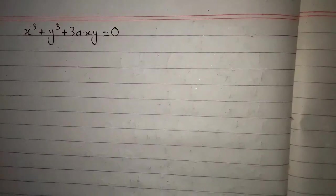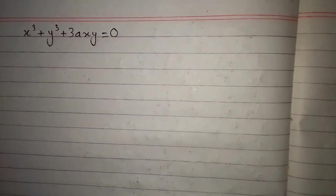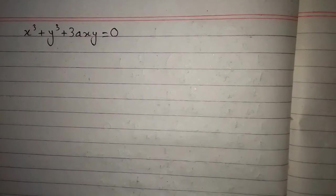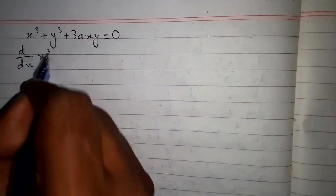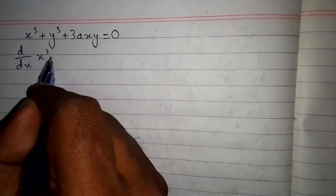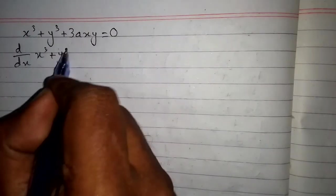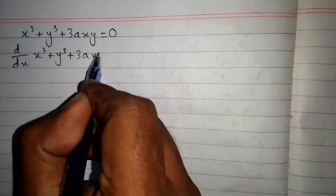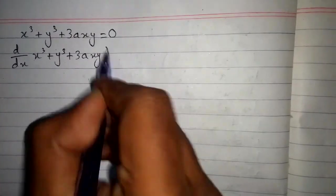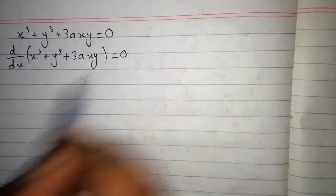In this video we are going to find out the derivative dy/dx of this equation. First of all we will apply d/dx on both sides of the equation. So we have d/dx of x³ + y³ + 3axy is equal to 0.